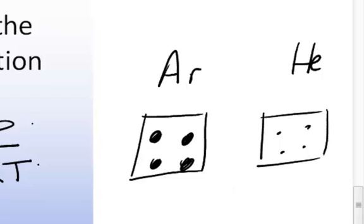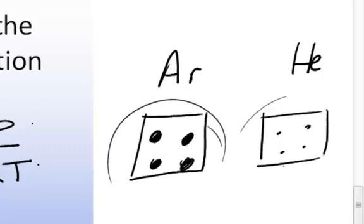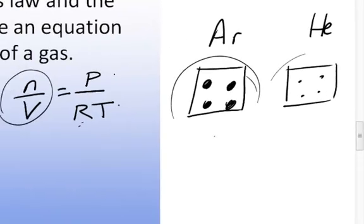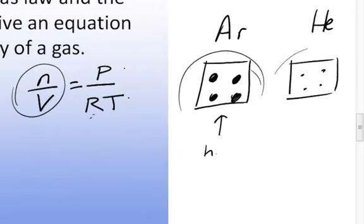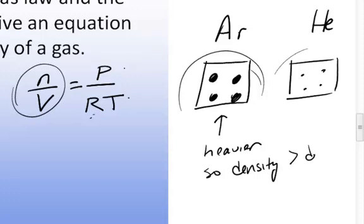Now let's think about mass density. If you think about the mass of the gas occupying a given volume for argon versus helium — the volumes are the same — it's clear that argon would be heavier because individual gas particles are heavier. So the mass density for argon is greater than the mass density for helium.